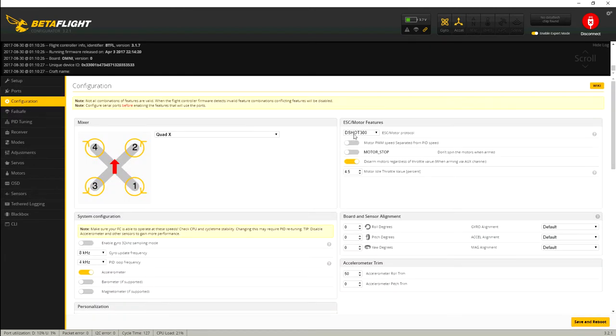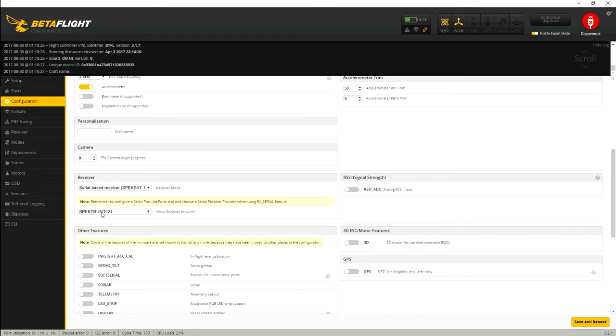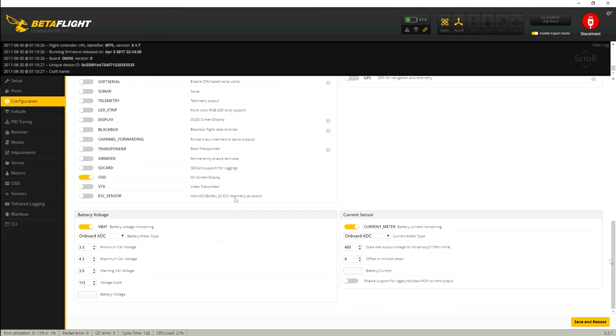Then on configuration, I'm just running DSHOT 300 8.4. Seems to run pretty well. Spectrum receiver, that's what it came with, so it depends what you get. Either FRSky or Spectrum. And the OSD is turned on. And for the battery voltage, you want to get this on board ADC. And then you would calibrate it with a multimeter or with a battery tester. Check the battery voltage and check what the OSD is displaying. And then you move these up and down accordingly.